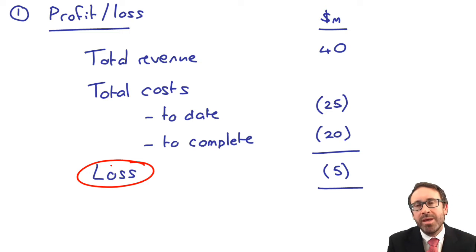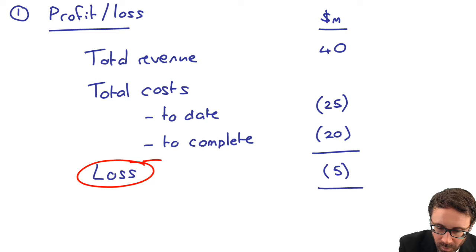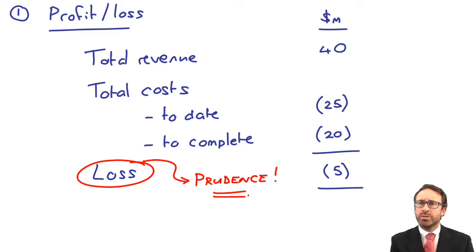And if we have a loss-making contract, then what takes effect is the accounting concept of prudence. If we see that we are a loss-making contract, then that loss, we need to recognize it 100%. We need to recognize it in full. How do we go about recognizing that loss in full?